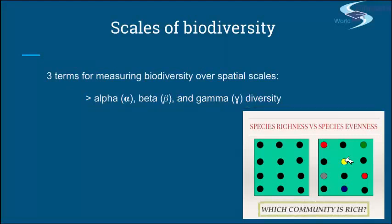As Wikipedia would suggest, Whittaker's idea was that the total species diversity in a landscape — which is gamma diversity — is defined by two different things: the mean species diversity in a site or habitat at a more local scale, and the differences among those habitats, which would be beta diversity. More detail to follow.